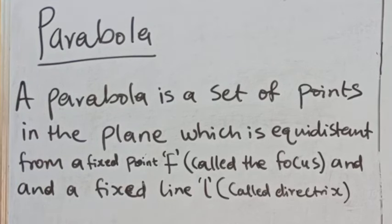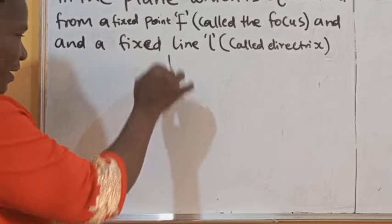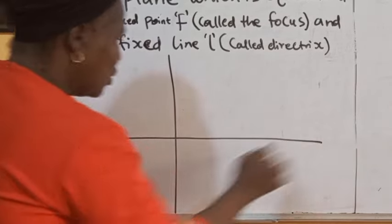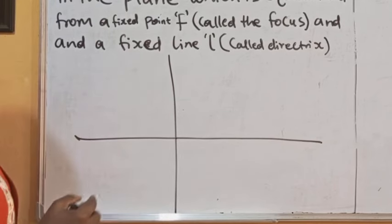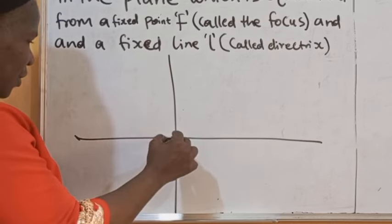Another curve we can get by making a straight cut in a cone is what we call a parabola. What is a parabola? A parabola is a set of points in the plane which is equidistant from a fixed point F, which we call the focus, and a fixed line L, which we call the directrix.